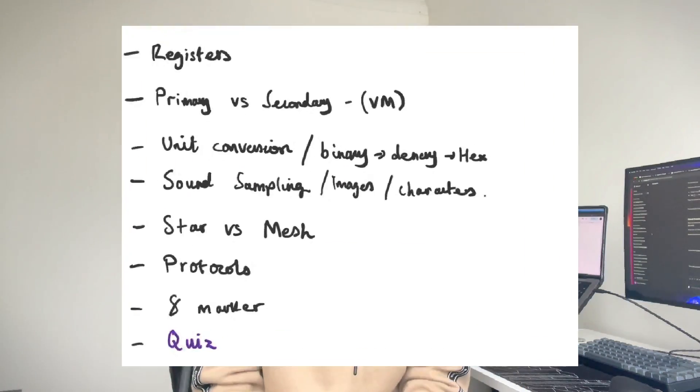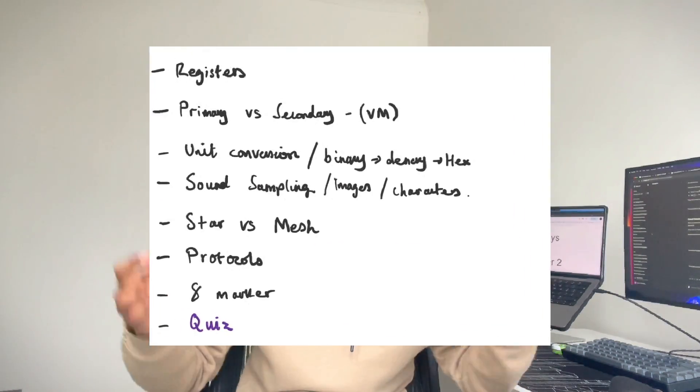Other than those two questions, the rest was pretty standard. I did predict a question on star and mesh topology, which did come up. The binary and denary stuff is all standard and you should be getting those right. I also said it would focus more towards sound, but we only saw a one-mark question. We pretty much covered most of the topics that came up in the live stream.